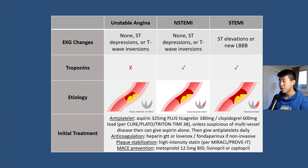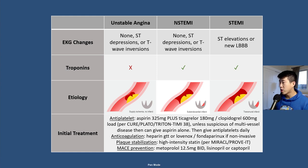For antiplatelets, it focuses on dual antiplatelet therapy: aspirin 325 mg load plus ticagrelor 180 mg load or clopidogrel 600 mg, based on the CURE trial, PLATO trial, and Triton-TIMI 38. Unless you're suspicious of multi-vessel disease, give aspirin alone, since if the patient may need CABG, dual antiplatelet requires a five-day waiting period. One alternative is kangrelor, a short-acting P2Y12 inhibitor with quick on/off kinetics, allowing CABG without delay.